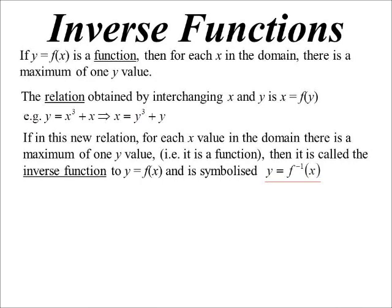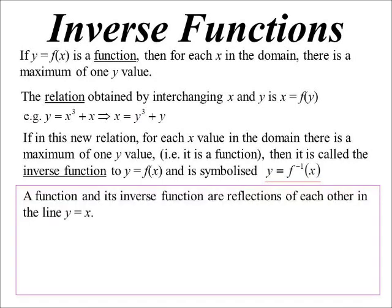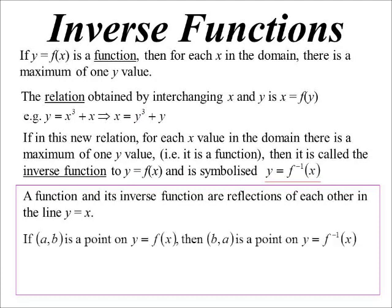The symbol we use is the negative one — f to the negative one — and note that it's not reciprocal. If you draw a function and its inverse on the same graph, they are reflections of each other in the line y equals x. So if (a, b) is a point on the original function, then (b, a) would be a point on the inverse function — the x and y's are swapping around.